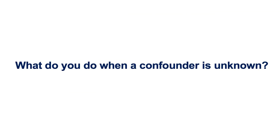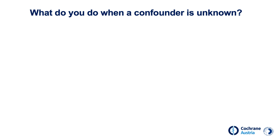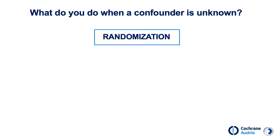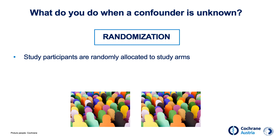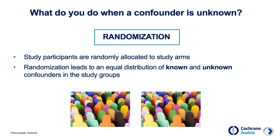But what do you do with confounders that are unknown to us? The only way to deal with unknown confounders is randomization. The study participants are randomly divided into study arms. Randomization leads to an equal distribution of known and unknown confounders in the study groups. If one observes a difference between the groups after an intervention, we can assume it was caused by the intervention. Randomization is the only effective remedy against unknown confounders.